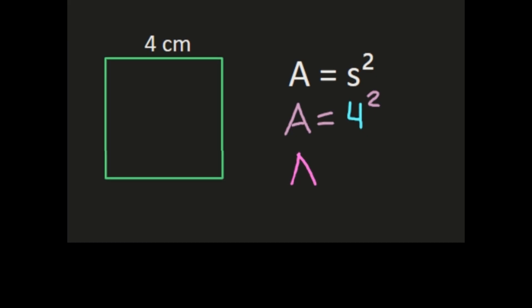And 4 squared is 4 times 4. 4 times 4 is 16. And we have area so it's centimeters squared. So the area of our square is 16 square centimeters.